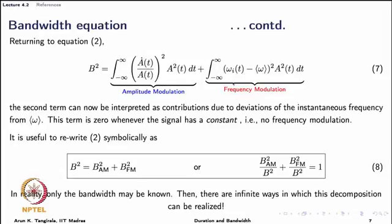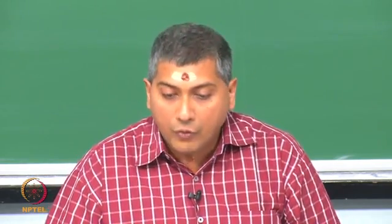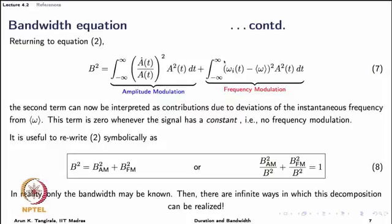Returning to the bandwidth equation, we substitute ω_i(t) in place of φ̇(t). The second term is now ready for interpretation: it represents the contribution of frequency modulation. When there is a frequency modulation, frequency changes with time, so ω_i(t) ≠ ⟨ω⟩. But for a pure sine wave of fixed frequency, the instantaneous frequency is constant and equal to the average frequency, so this term vanishes. Whenever there is frequency modulation this term will in general exist, and therefore it represents the frequency modulation contributions to the bandwidth.